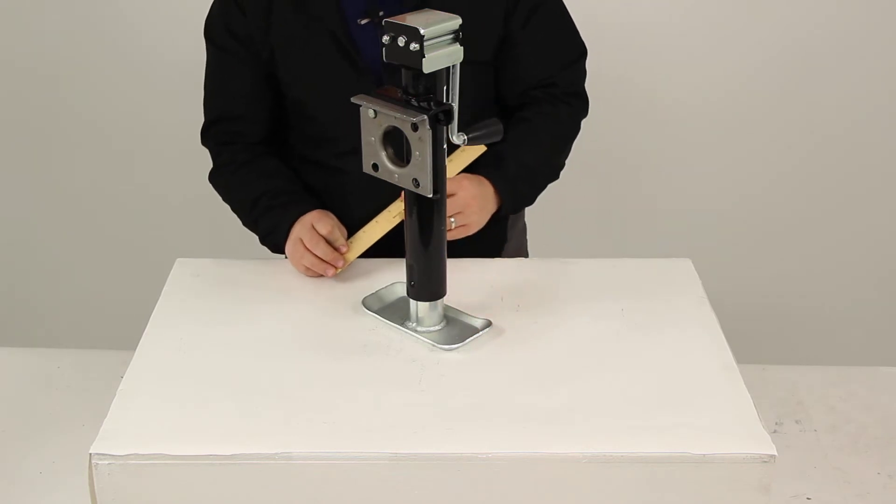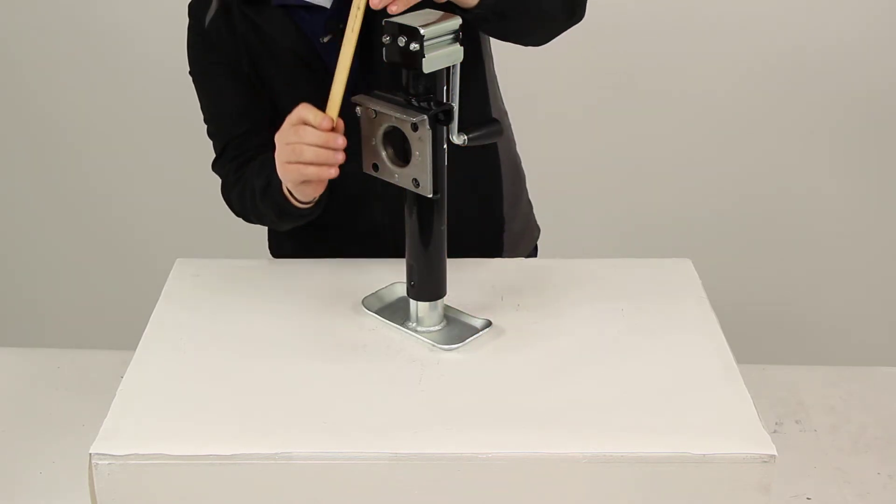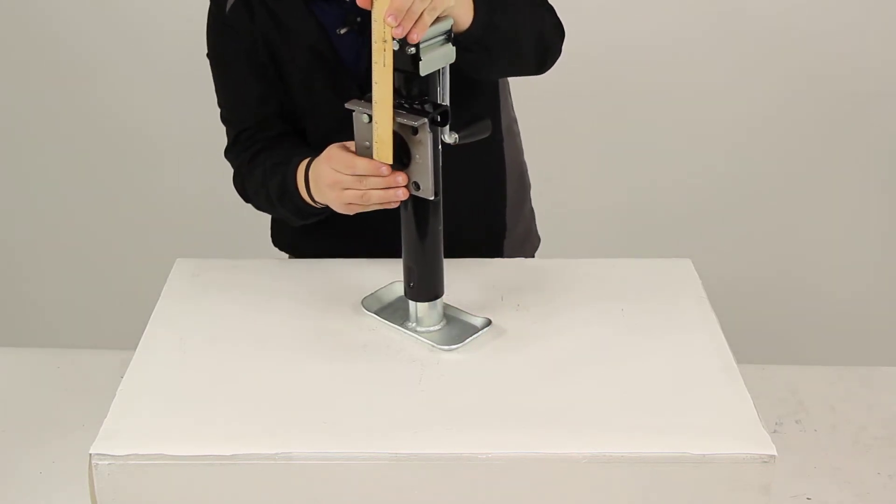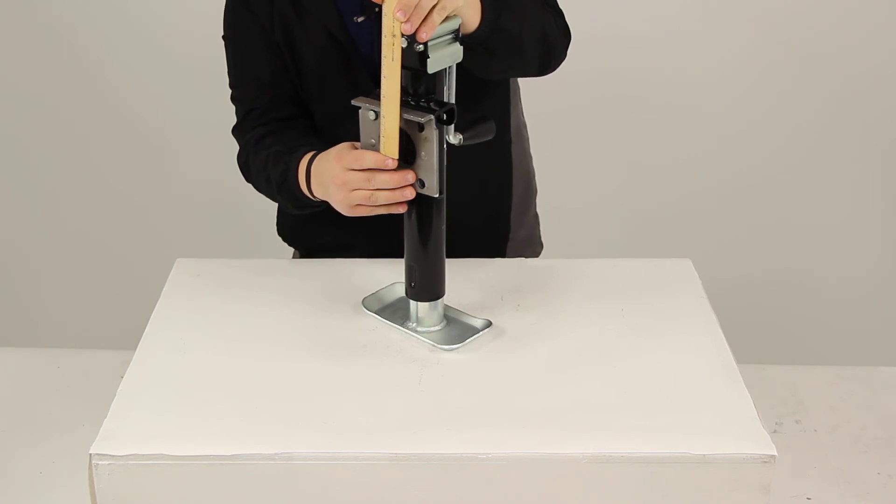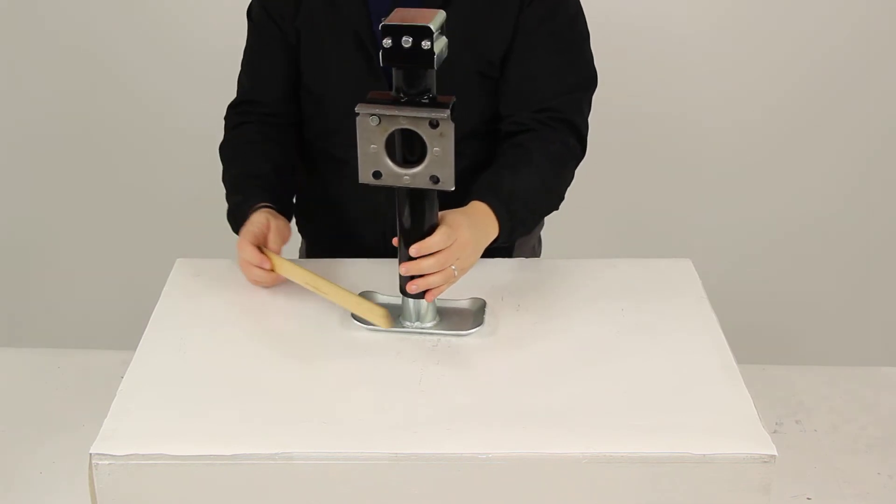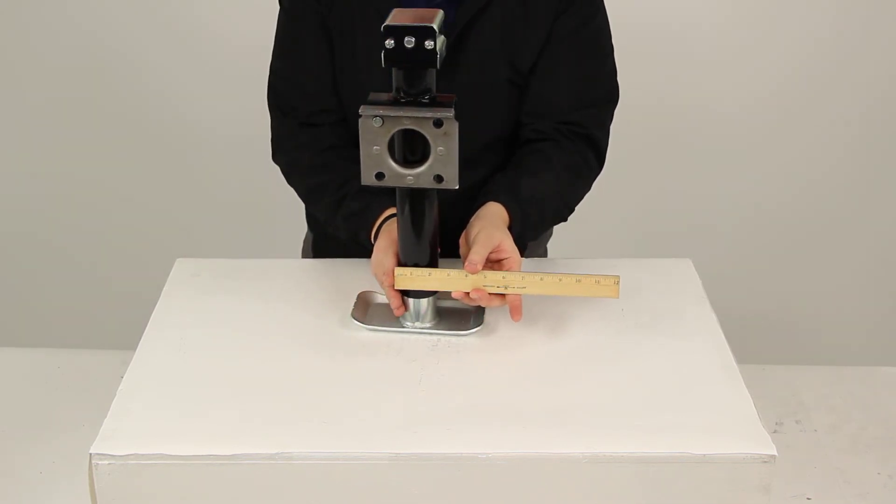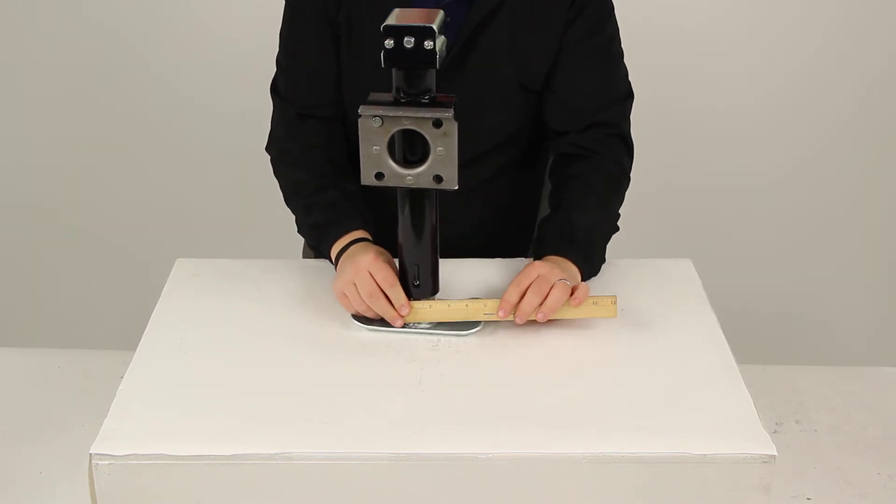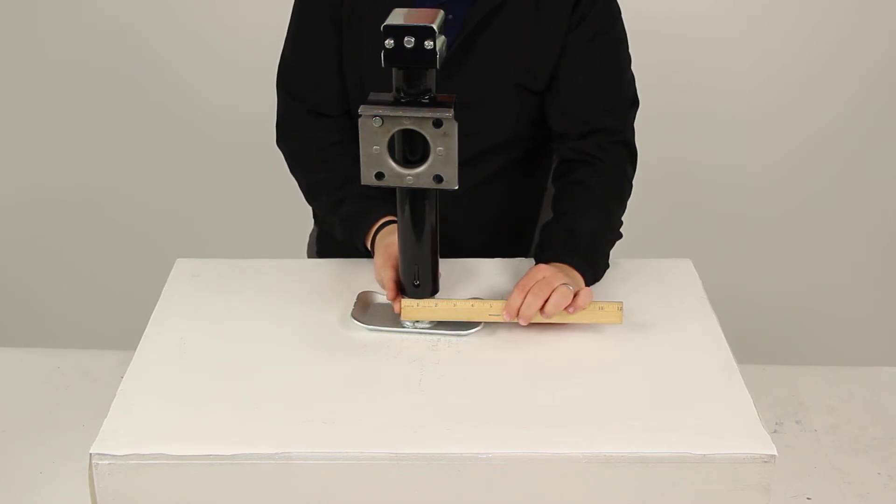The clearance from the center of the mounting bracket to the top of the jack is 6 5/16 inches. The outer tubing has a diameter of 2 1/4 inches and the inner tubing has a diameter of 2 inches.